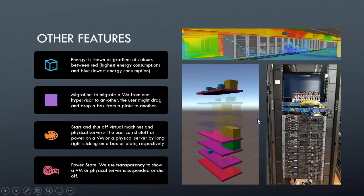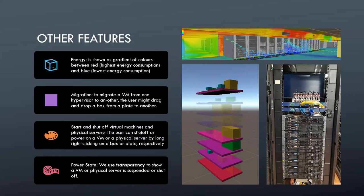We also have start and shut off of virtual machines and physical servers. The user can shut off or power on a VM or physical server by right-clicking a box or a plate. For example, if I want to turn on this VM — which is currently turned off because it's transparent — I can right-click it and the model would start blinking, signifying that it's going to turn on or off.